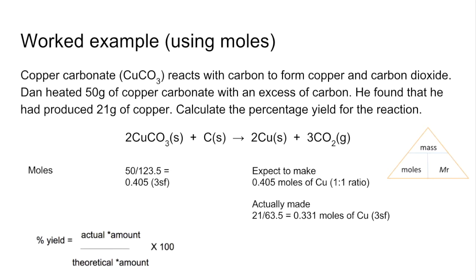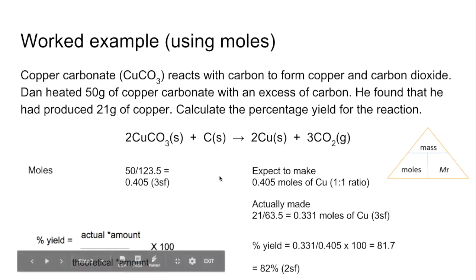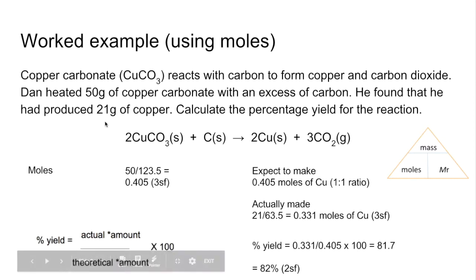Using the percentage yield formula — actual over theoretical — he's actually made 0.331 moles and should have made 0.405 moles. So 0.331 over 0.405 times 100 gives 81.7, which we express to two significant figures as 82%, because the data was supplied to two significant figures.